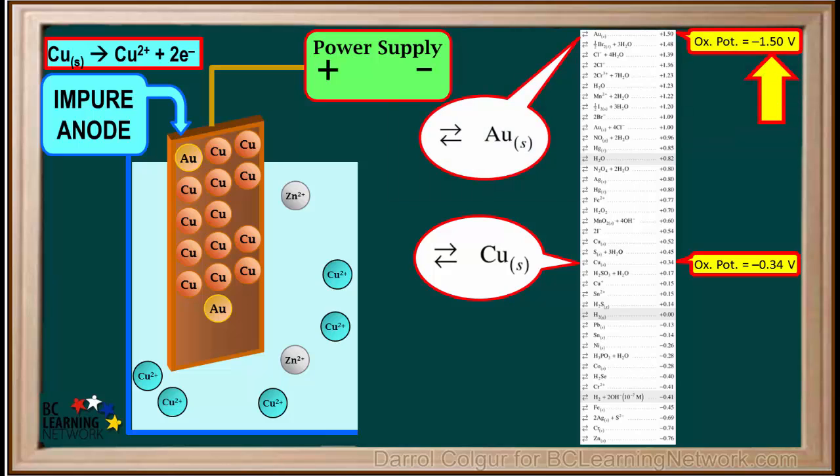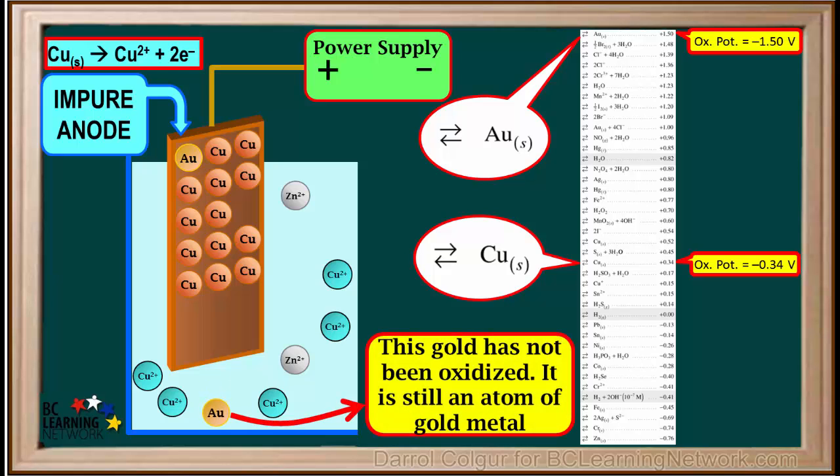Because gold has such a low oxidation potential, it cannot be oxidized as long as copper atoms are still present in the anode. As all of the copper atoms surrounding gold atoms are oxidized and leave the electrode, there is nothing left to hold the gold atoms up, so they will simply fall down onto the bottom of the container. It is important to remember that this gold has not been oxidized, it is still a neutral atom of gold metal. Metals above copper on the right side of the table will fall off of the anode in metallic form and collect below it in the container.